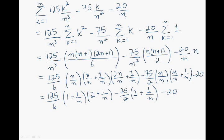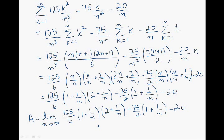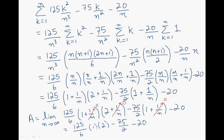Our last step is to take the limit as n approaches infinity for this expression. What this does is make the number of rectangles approach infinity, and therefore the area we obtain is the exact area under the curve. When I evaluate the infinite limit, the 1 over n terms all go to 0, and I'm left with the simplified result. This simplifies to minus 95 over 6, which is our area, and that concludes this presentation.